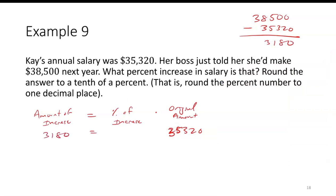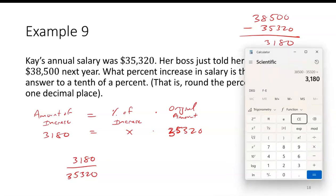And that's equal to some unknown percent times $35,320. So in this case, percent's unknown. So I want to divide. $3,180 divided by $35,320. So that comes out to be 0.0900. So that's about 9.0% to the nearest tenth of a percent.